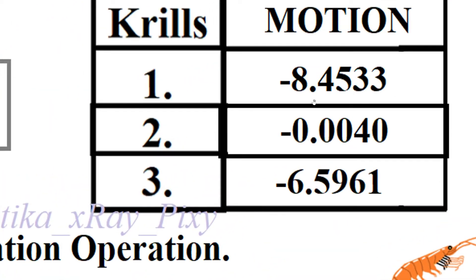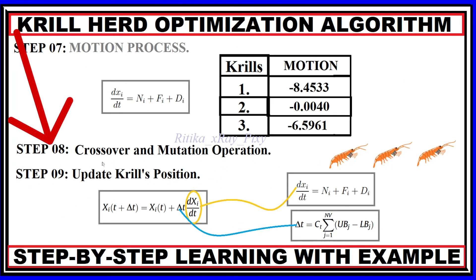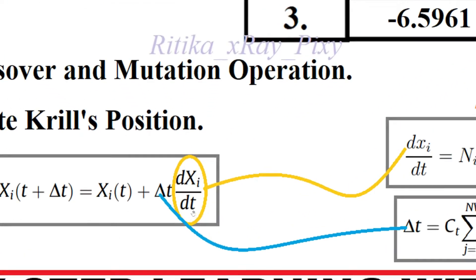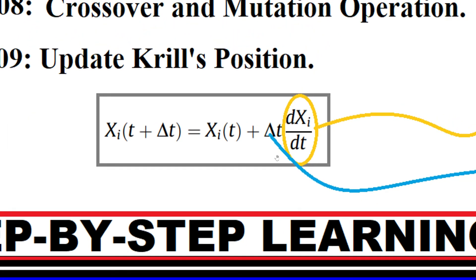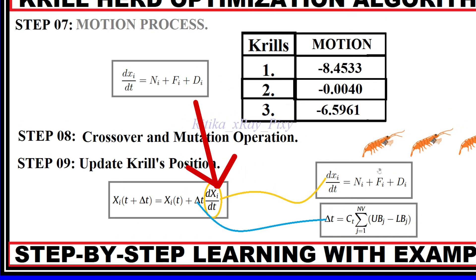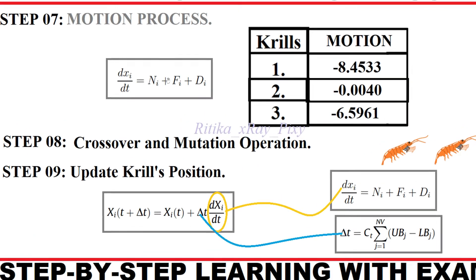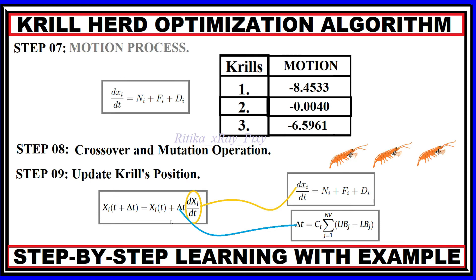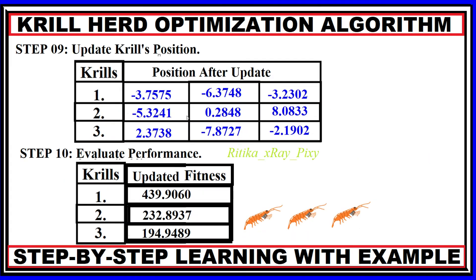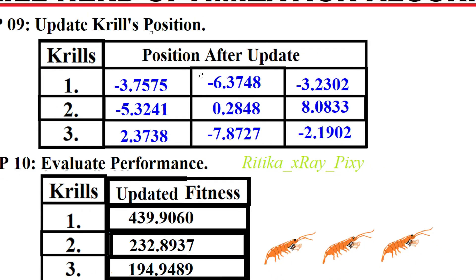In step 8, we perform crossover and mutation operations. After that, we update the position for the krills using the position update equation: the new position equals the previous position plus the computed motion multiplied by the rate of change of momentum. This gives us updated position values for all three krills in the search space.